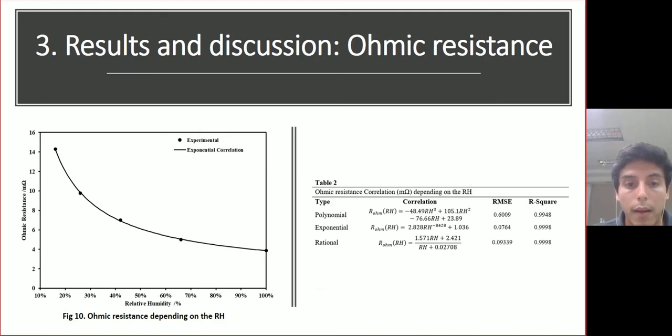So in the ohmic resistance, when the relative humidity has a value of 16%, the ohmic resistance has its maximum value of 14.30 mΩ and reaches a minimum of 3.87 mΩ with 100% of relative humidity. So in this, you can see the increase of the value of ohmic resistance when the cell works at low humidity may connect it with the low membrane proton conductivity due to a low hydration level. Also, two types of correlation were tested where the exponential correlation obtained the best fit and the different type of correlations are shown in the table 2.